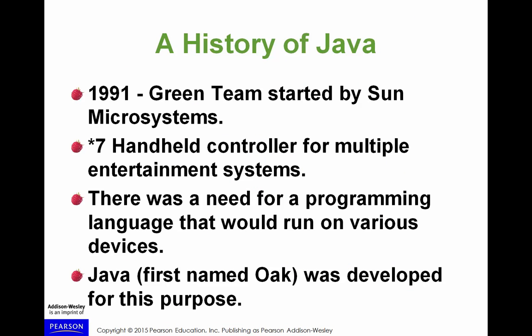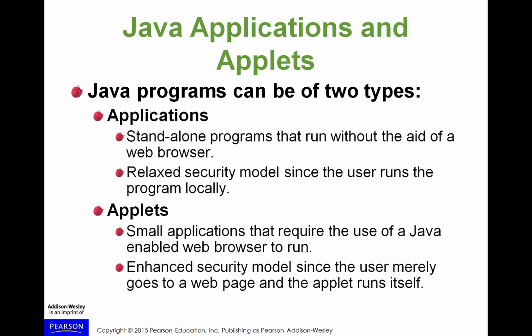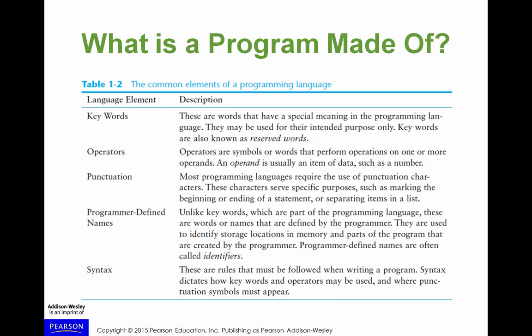I'm skipping over what a program is, and the history of Java is interesting — I'd encourage you to look at it in the chapter, but it won't be part of this video. There are two types of Java structures: applications, which are standalone programs like system applications you're familiar with, and applets, which run in web browsers. Applets are usually embedded in a page and can deliver processing on the Internet, although JavaScript is a lot more popular for that purpose nowadays.